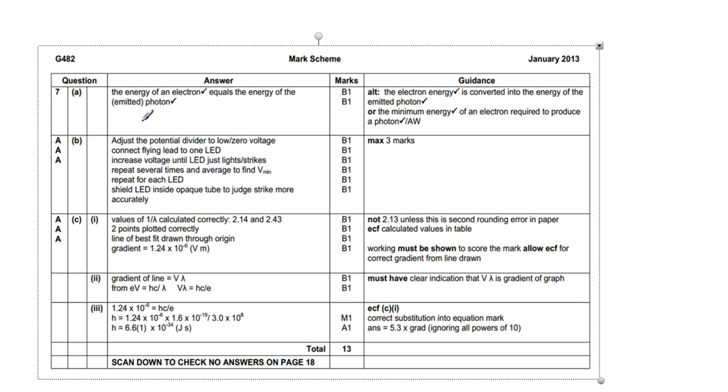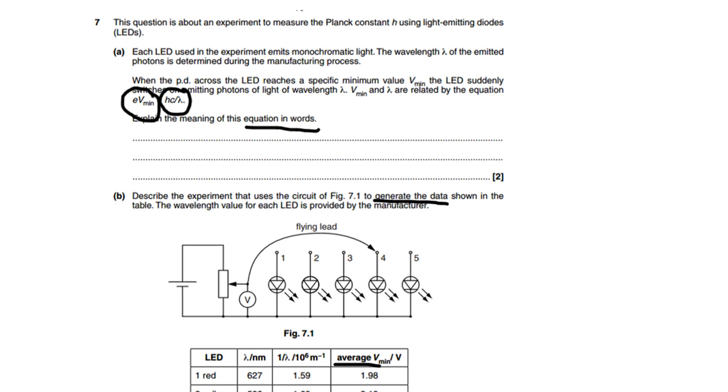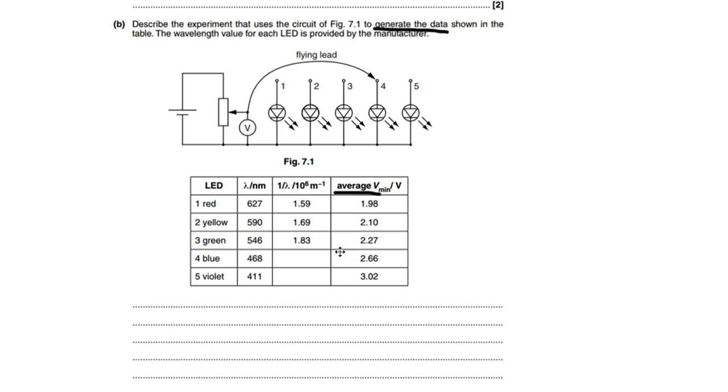If we flick back to our mark scheme, it says here repeat several times. So we needed to mention something about the experiment being repeated several times. Here it is again, a repeat for each LED. A lot of us were going into a lot of detail about how the equipment worked, rather than how we would use the equipment to generate this data. So a few missing marks there from not describing, step by step, what it is we're actually doing with the equipment. And we'll know to make a bit of an improvement on that for next time.